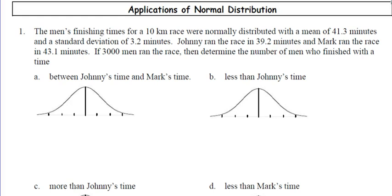Men's finishing time for a 10k race were normally distributed with a mean of 41.3 and a standard deviation of 3.2. Johnny ran the race, Mark ran the race. If 3,000 men ran the race, determine the number of men who finished with a time between Johnny and Mark. So I like to list the mean and standard deviation: mu is 41.3 and sigma is 3.2.